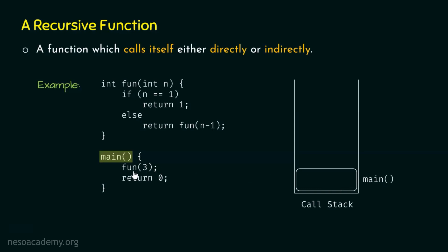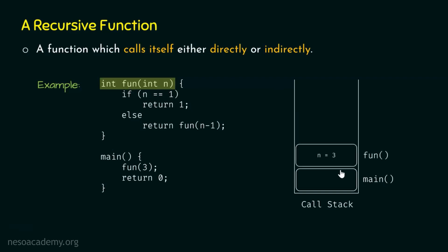Now let's call fun and pass value 3 to it. This value will be received by parameter n. The activation record of fun with n equal to 3 goes inside the stack and becomes the top — meaning fun(3) is the current function under execution. We check: is n equal to 1? n is 3, so this condition is not satisfied; the else block executes. The statement is return fun(n - 1). Since n is 3, n minus 1 is 2, so we call fun with value 2.